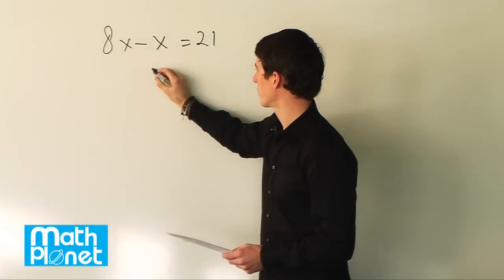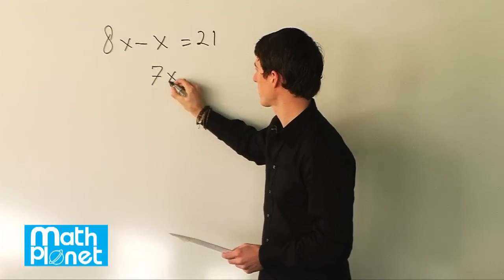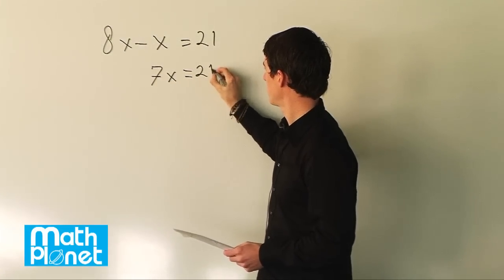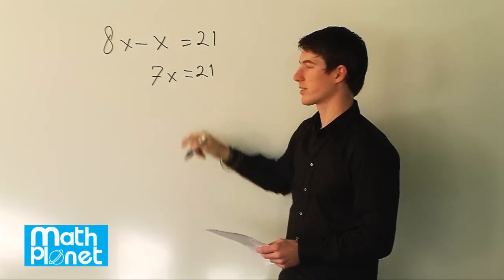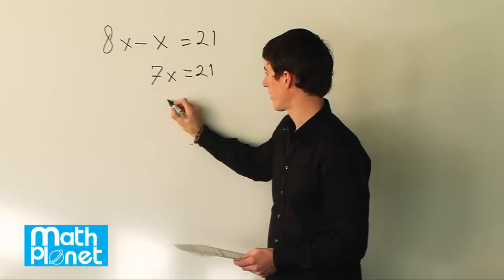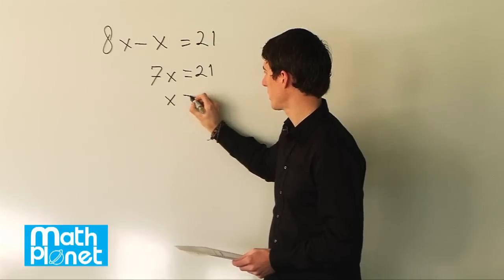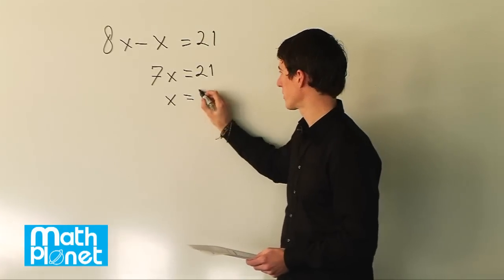8x minus x reduces to 7x and then we have 7x equals 21 so we can divide both sides by 7 to get the x by itself. When we divide both sides by 7 we just get x equals 21 over 7 which is 3.